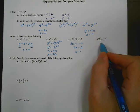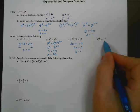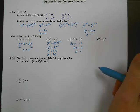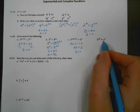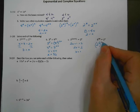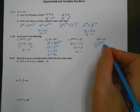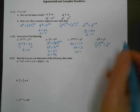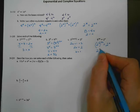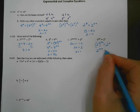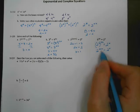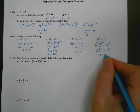Next one's a little tricky. This is 8 to the 70 equals 2 to the x. They're not the same base, so I can't write x equals 70. But 8 is a power of 2 — 8 is 2 to the 3rd — still raised to the 70th. So this becomes 2 to the 3 times 70, which is 2 to the 210. Since the bases are the same, the exponents must be equal, so x equals 210.